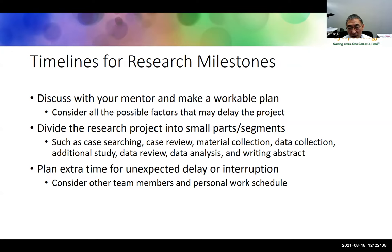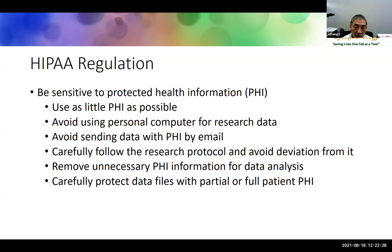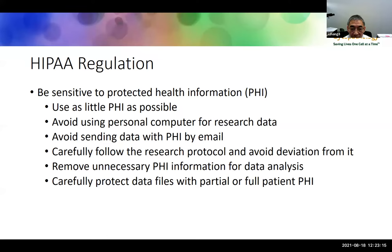If your research timeline falls in the summertime, make sure to account for all personnel potentially on summer vacation — like research techs and the people who perform immunostains. The second most important thing is HIPAA regulation. Even with IRB approval, during the entire research process you must keep HIPAA in mind. Use as little protected health information as possible. Avoid using any personal computer to store research data or patient information, and avoid sending mass emails among your research group, as this risks massive leaking of protected health information.